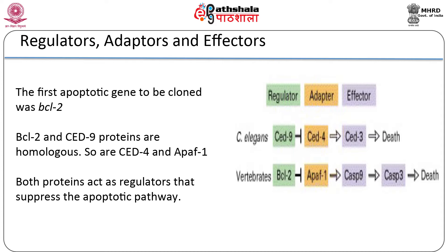Both BCL2 and CED9 act as regulators that suppress the apoptotic pathway. In addition, both proteins contain a single transmembrane domain and are localized in the outer mitochondrial, nuclear, and endoplasmic reticulum membranes. In vertebrates, BCL2 is the regulator, APAF-1 is the adapter, and caspase 9 and caspase 3 are the effector genes involved in programmed cell death.